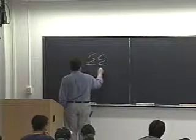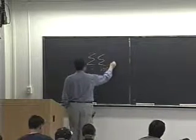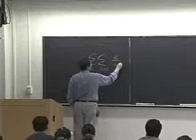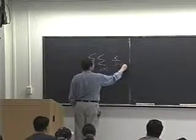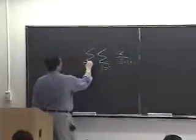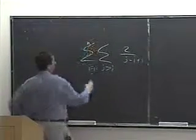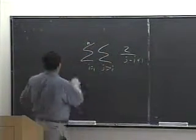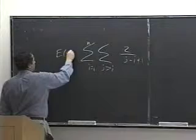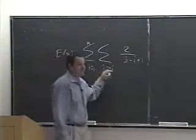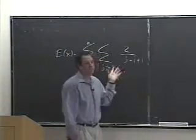Something like this: sum over i, j greater than i of 2 over (j minus i plus 1). This was the expected number of comparisons that randomized quicksort did, and the key to that whole thing was a very cute kind of insight.